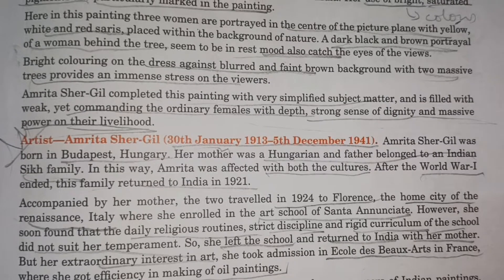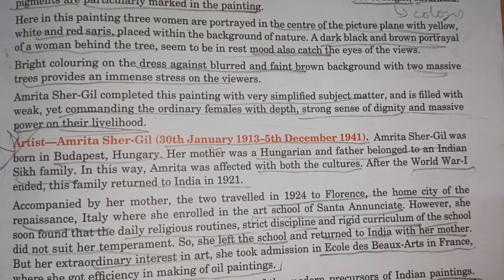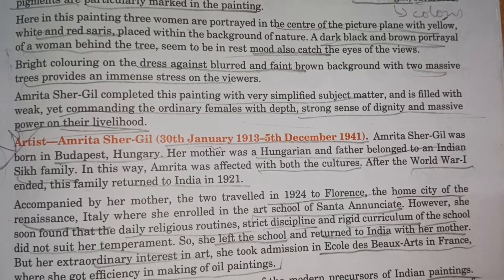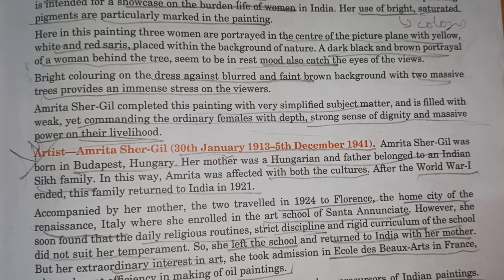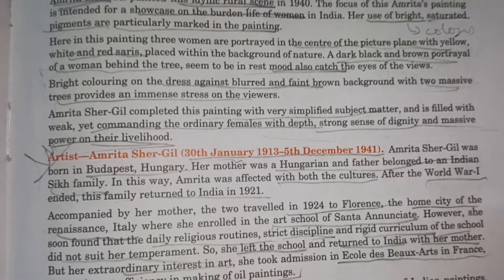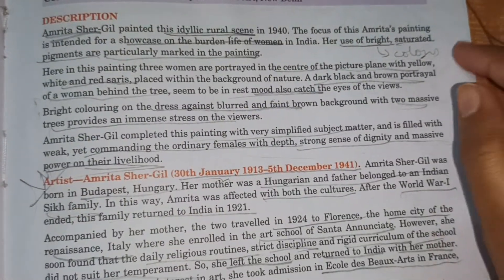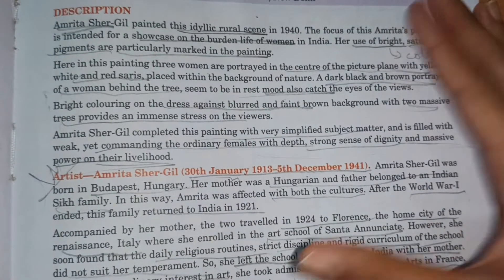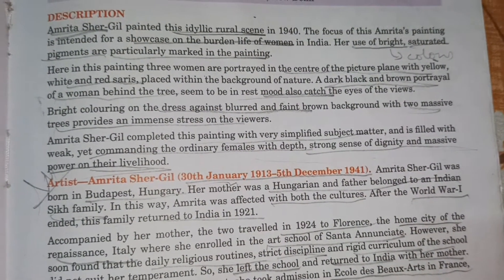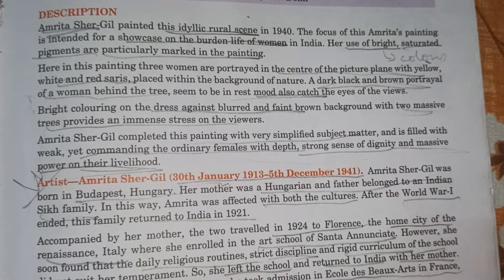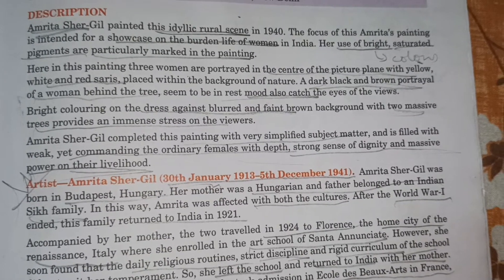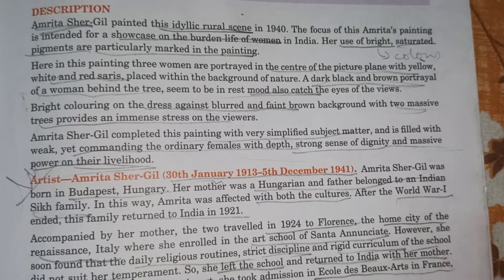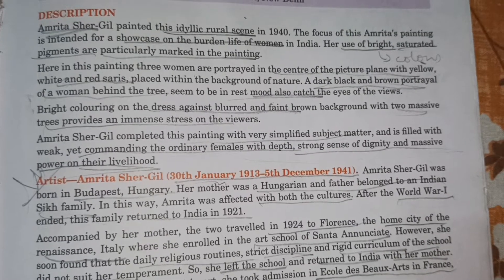A woman figure with bright coloring on her dress stands against a blurred and faint brown background with two massive trees, providing an immense draw on the viewer. The background is blurry, but the light-colored saris and female figures create a lot of visual attraction. Amrita Shergil completed this painting with a simplified subject matter, filling it with ordinary females depicted with a strong sense of dignity and massive power in their livelihood.